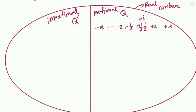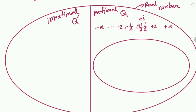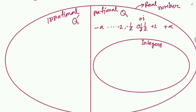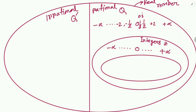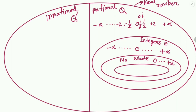Inside the rational number set, let's draw another ellipse and call it integers, represented by Z. Integers means all numbers from negative infinity to positive infinity that are not fractional numbers. All negative and positive whole numbers are integers. Dividing integers further, we get whole numbers — represented by N-naught — which means zero to positive infinity, excluding negative numbers. Then inside whole numbers, there is another set: natural numbers, represented by N, which excludes zero.